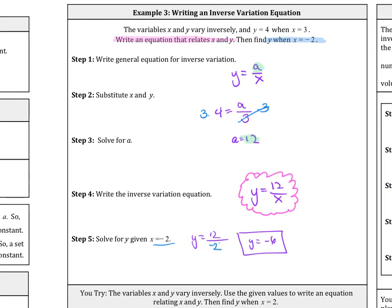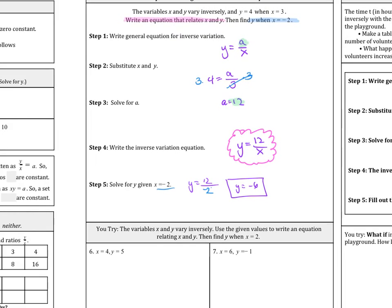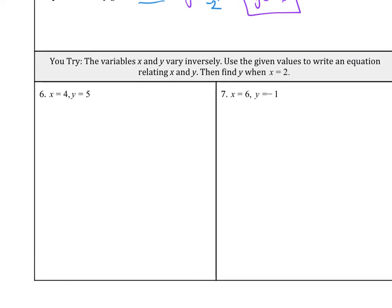So that's how you write an equation, right? Write an inverse variation equation, that was our focus. And then we're given a value and we plug it in. So two things that should be boxed for these type of problems. So try number 6 and number 7.